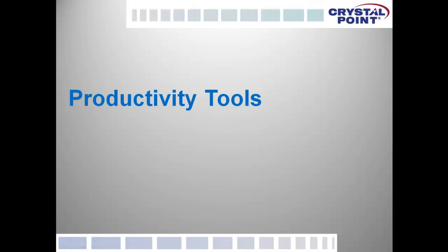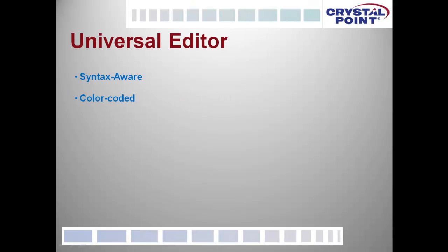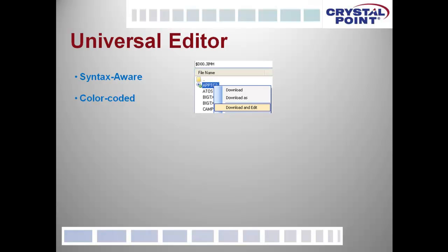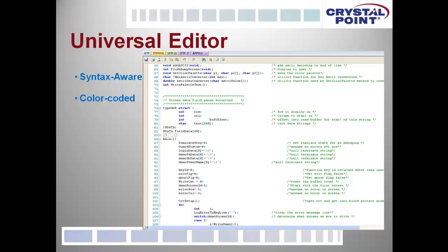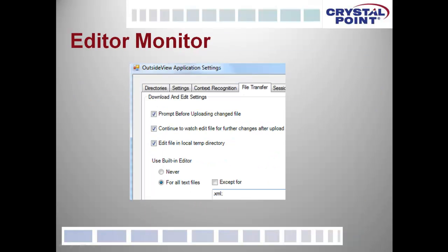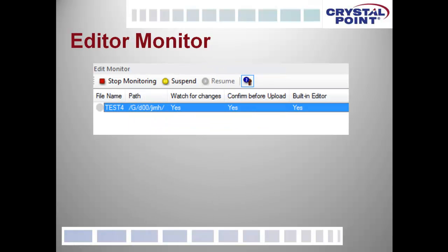For programmers and developers, we've given some incredibly effective tools. We've now embedded a universal editor that is syntax-aware, color-coded, and intelligent. To access it, you pick a file, say Download and Edit, you're prompted for the language that file is, and the file is brought up in that editor. We've also added an edit monitor — a watchdog so that if you make edits to a file and forget to upload it back to the host, we let you know. If you try to exit OutsideView, it will ask if you meant to upload a file you've changed since last uploading. That monitoring can also be stopped, suspended, or resumed.